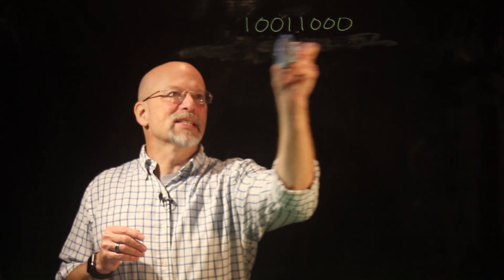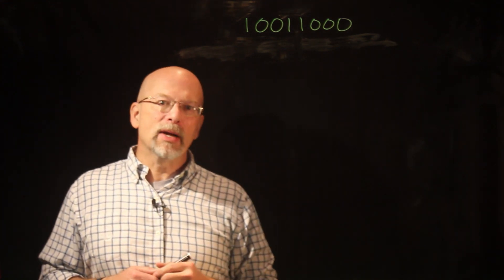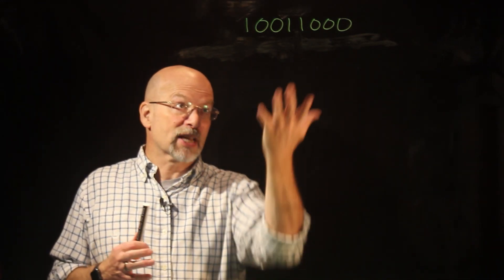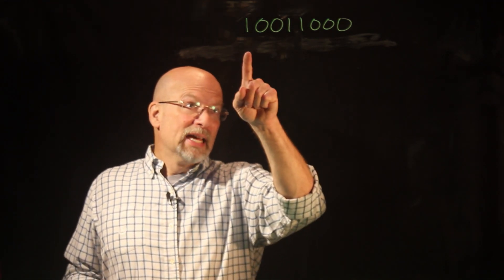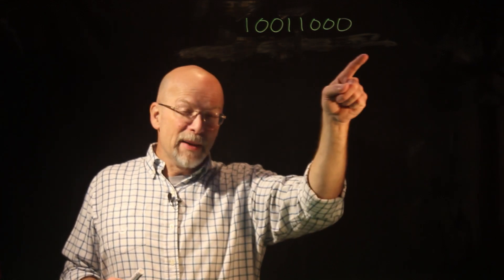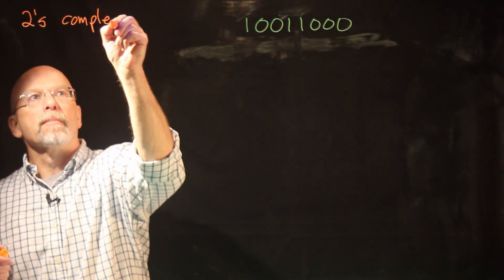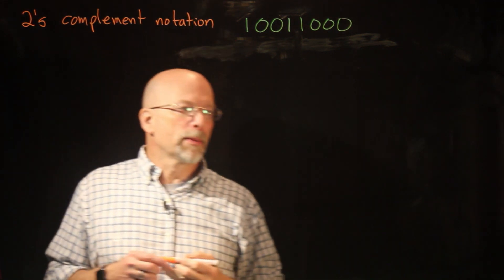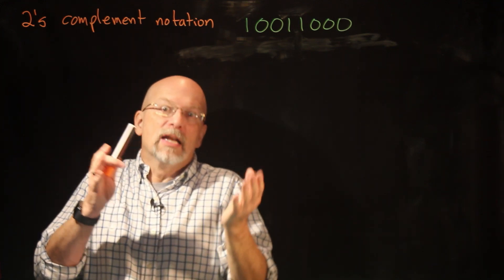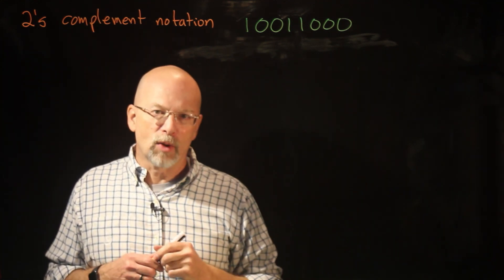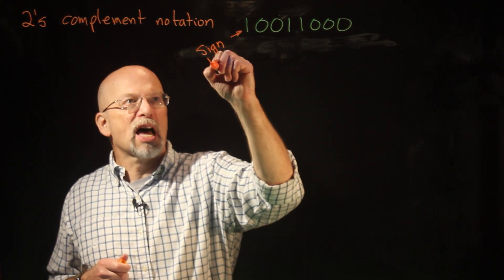We did talk about something in the last lesson — complementary math. Complementary math said that if you have a fixed number of digits — in this case eight digits — then we can say there's a relation between this number and the unsigned binary, but some of the patterns of ones and zeros we're going to reserve for negative numbers. This was called two's complement notation. What we were looking at whenever figuring out which patterns were reserved for negative versus positive was this most significant bit, which is referred to as the sign bit.